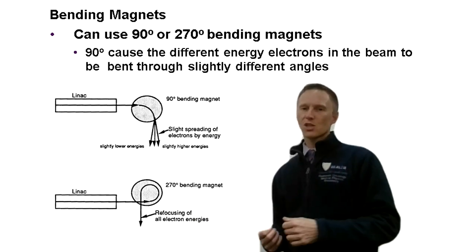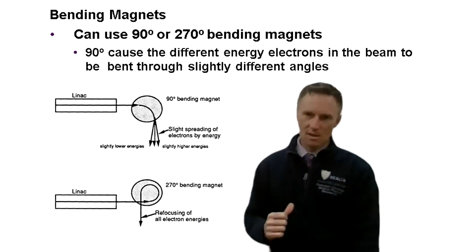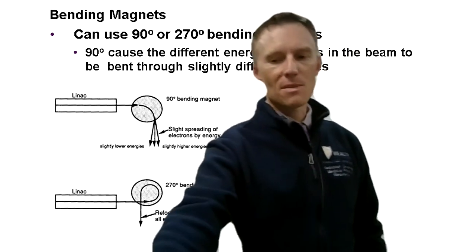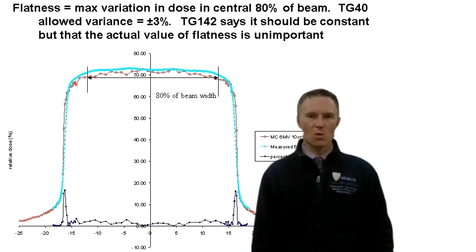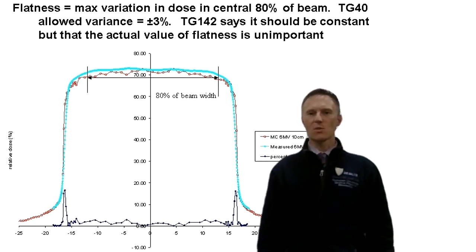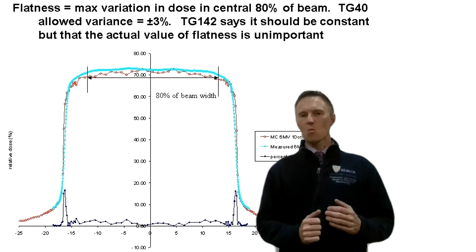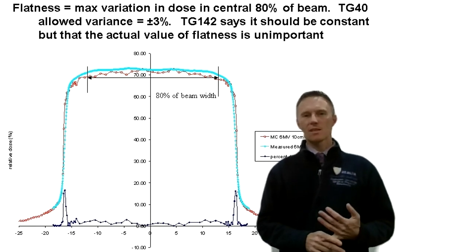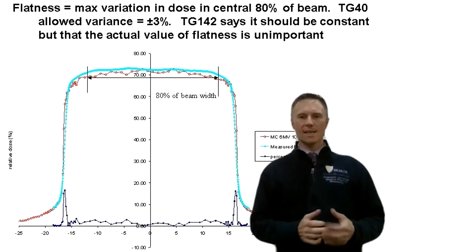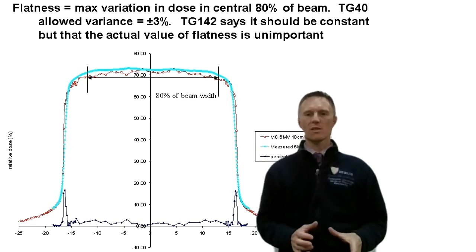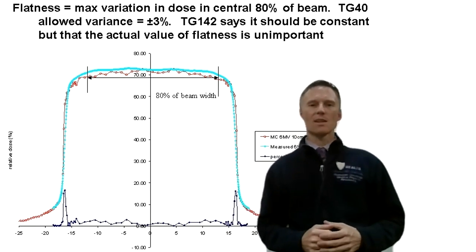The ion chamber does more than just count photons and verify output — it also has the ability to re-steer the beam. If current to the bending magnets fluctuates and the beam steers toward the foot of the table, the bending magnets have a feedback loop from the ion chamber that sends a signal to correct it. This feedback loop is constantly working throughout the entire time the beam is on, ensuring a flat and symmetric beam.